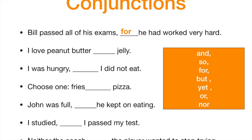I love peanut butter and jelly. 'And' is a word that simply adds or connects by addition. I was hungry, but I did not eat. 'But' is a crucial conjunction — it's essential, it's necessary, very important. What it does is it shows a contrast or an opposing viewpoint between one part of the sentence and another. So, I was hungry, but I didn't eat — there's a contrast between 'I was hungry' and 'I did not eat.'